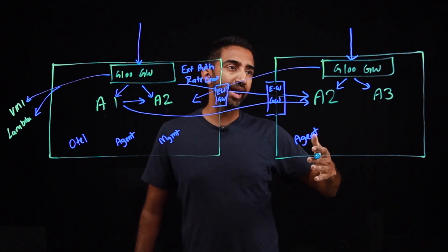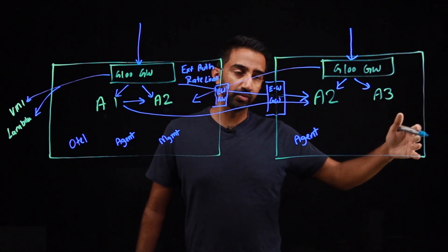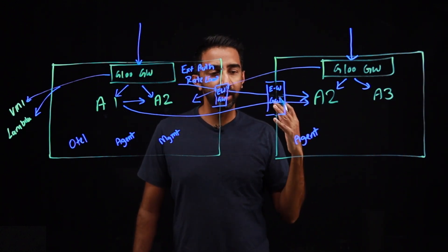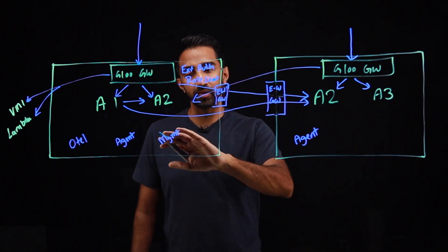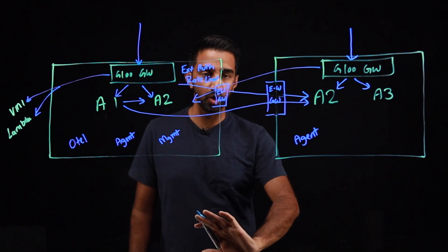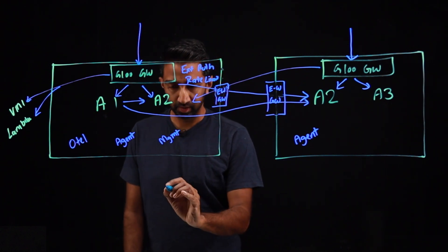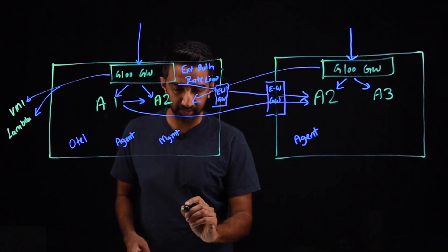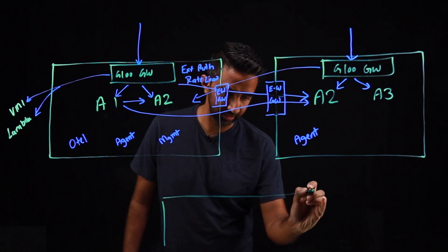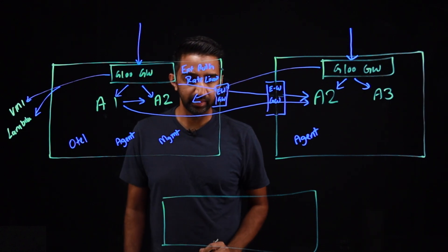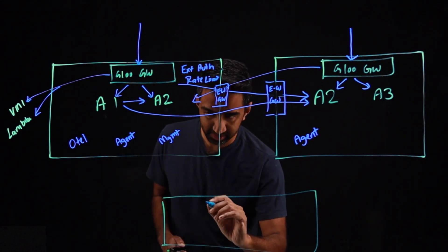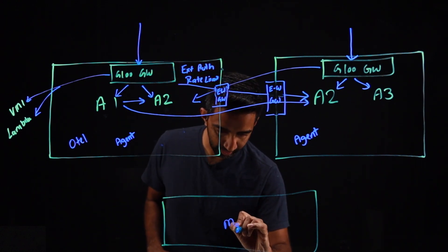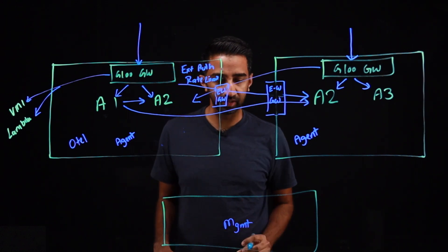As you start adding more clusters now, let's say you have 3, 5, 10, 100, you now are at a point where you can start thinking about moving the management plane to its own dedicated cluster. So let's say now you have another cluster. Think of this as an internal cluster that is dedicated to just the management plane. So we're going to move this management plane out of cluster 1 and run it in a separate cluster.